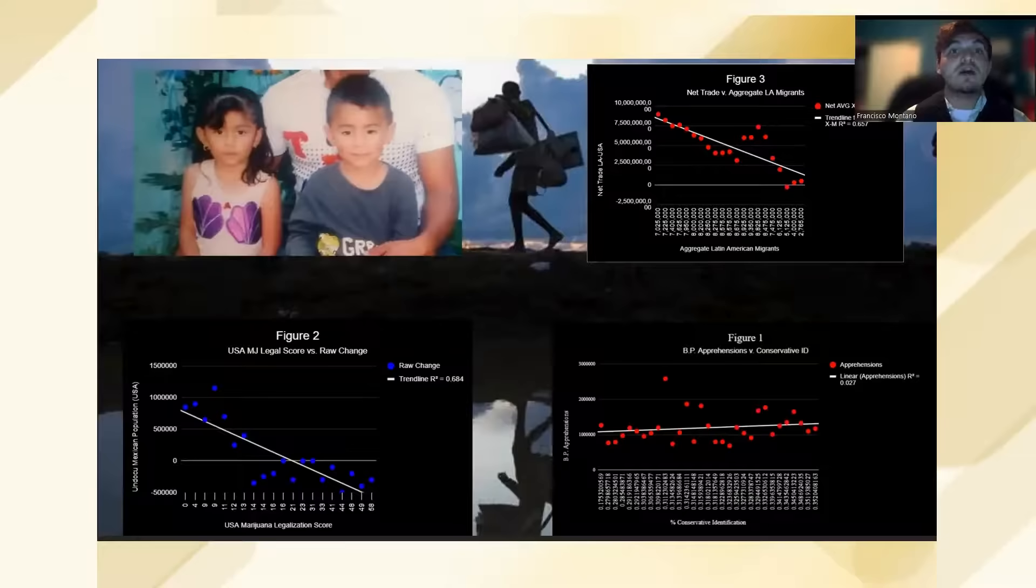I conducted a linear regression to compare the amount of states legalizing marijuana in the USA to the net flow of Mexican nationals migrating here. The statistically significant results demonstrate an intense correlation between the amount of states legalizing marijuana in the USA and a net decrease in the flow of Mexican nationals migrating here, as shown by Figure 2.